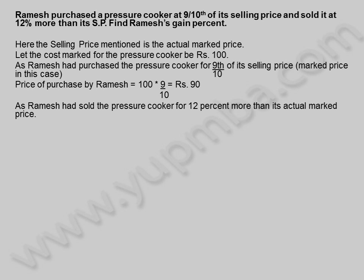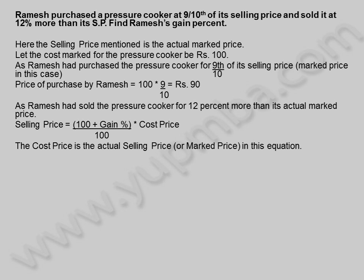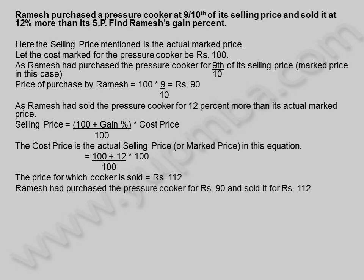As Ramesh had sold the pressure cooker for 12% more than its actual marked price, selling price is equal to (100 plus gain percentage) divided by 100, into cost price. The cost price is the actual selling price in this equation. This is equal to (100 plus 12) divided by 100 into 100. The price for which the cooker is sold is equal to 112 rupees. Ramesh had purchased the pressure cooker for 90 rupees and sold it for 112 rupees.